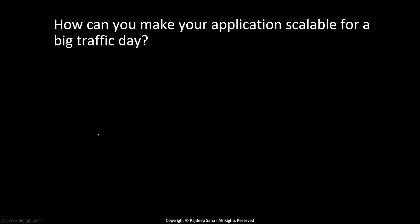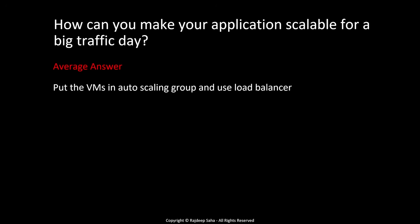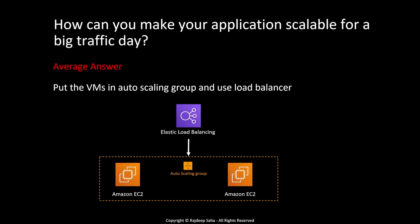Question number one: how can you make your application scalable for a big traffic day? An average answer would be: put the virtual machines or EC2s in an auto scaling group and use a load balancer. Nothing is wrong with this answer — probably three years back this would have been a great answer — but now cloud is mature. So any project you go and start working with, they already know about this. When they come to you as a solutions architect, they expect something extra.